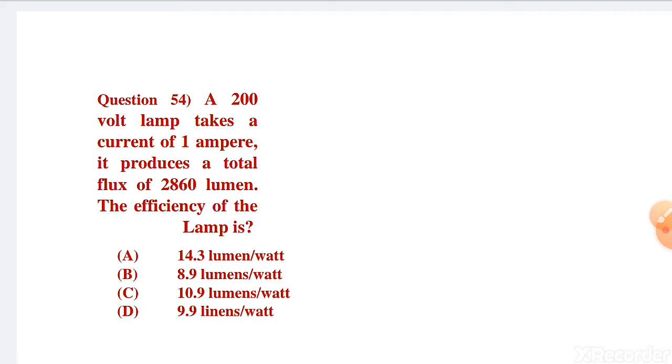A 200 volt lamp takes a current of 1 ampere. It produces a total flux of 2860 lumens.